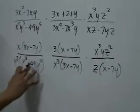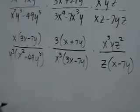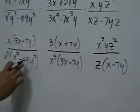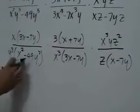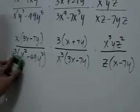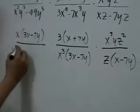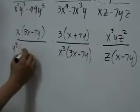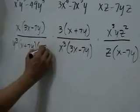Now, if you take a look at this second factor in this denominator, you can see that x squared minus 49y squared can still be factored. It's a difference of two squares. And we can replace this with x plus 7y times x minus 7y.